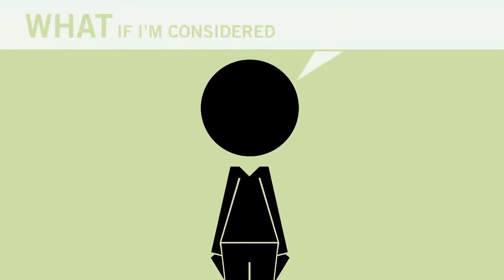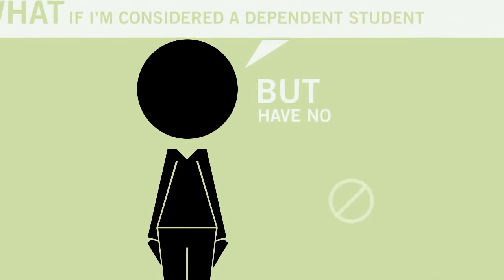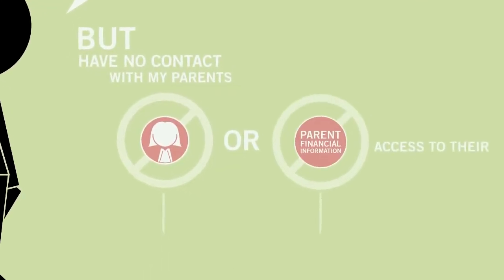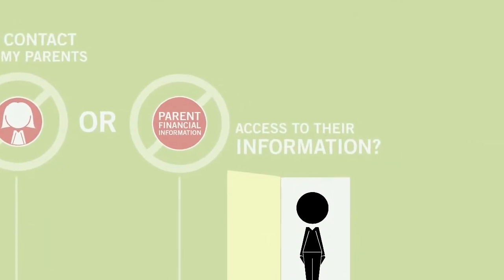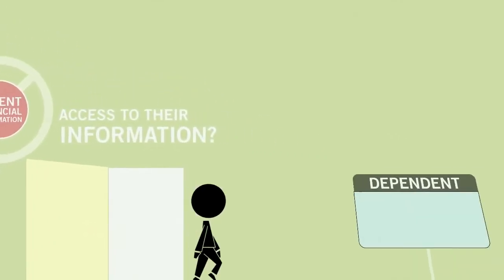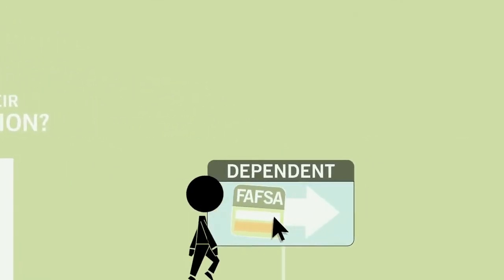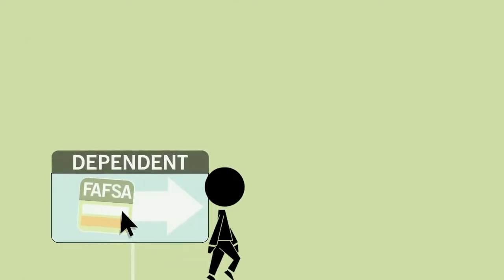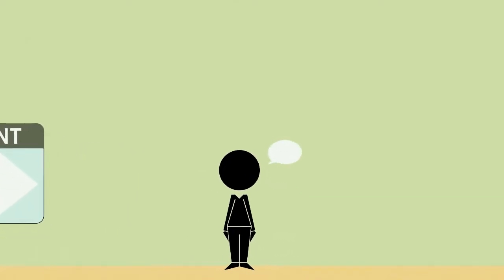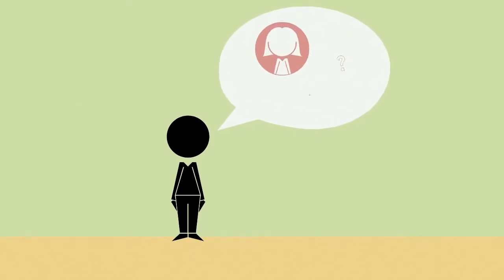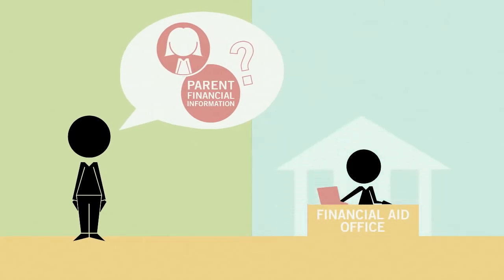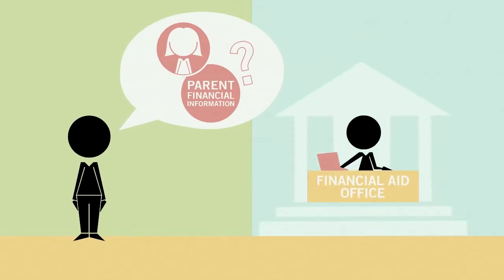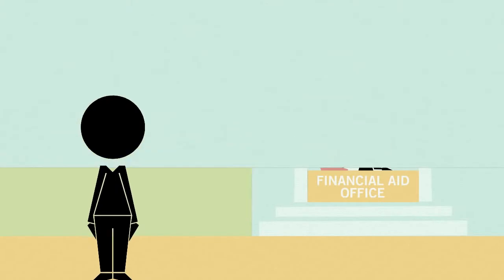What if I'm considered a dependent student, but have no contact with my parents or access to their information? There are other options available to you in these situations, so it is possible for a dependent student to submit the FAFSA without parental information. If you have indicated on your FAFSA that you cannot contact your parents or access their financial information, you'll need to speak to staff at the financial aid office at the college or career school you plan to attend. The financial aid staff will tell you what to do next.